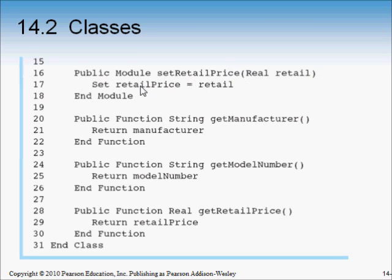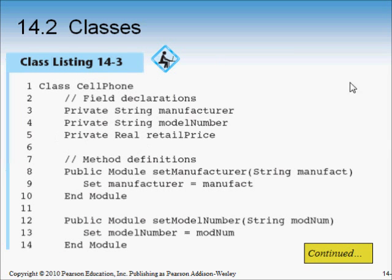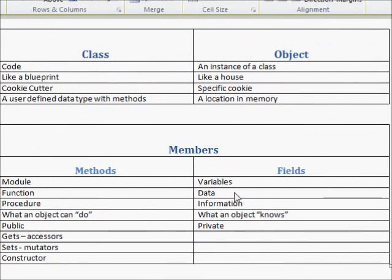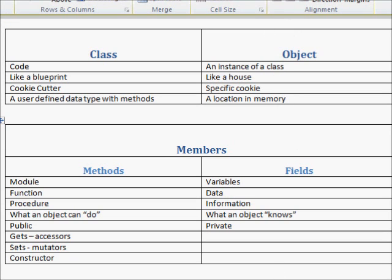Gets and sets are just ways for main to interact with the private member variables. Another word for gets is accessors — we're just accessing the fields with our get methods. Another word for sets is mutators — because we're actually changing fields when we use a set. We'll talk about constructors in a moment.